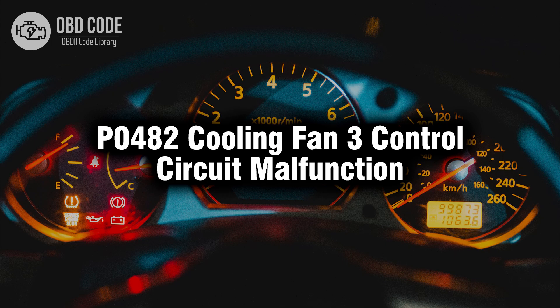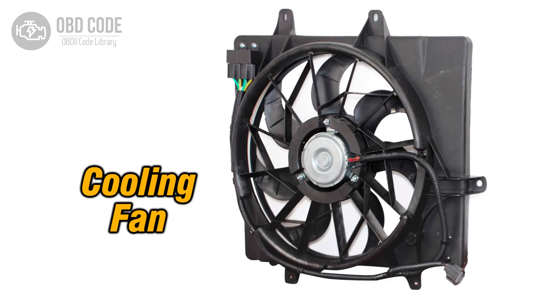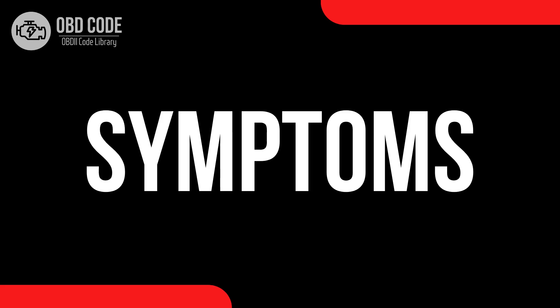Welcome. In this video we will talk about code P0482, its symptoms, causes and possible solutions. The P0482 trouble code indicates a malfunction in the control circuit of cooling fan 3. This code is typically triggered when the engine control module (ECM) detects an issue with the circuit responsible for controlling the operation of the third cooling fan.